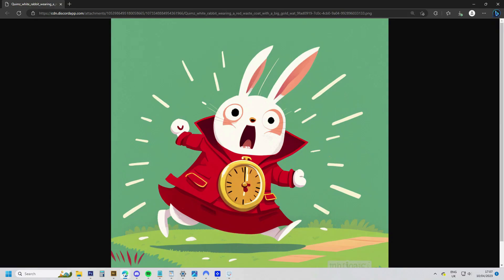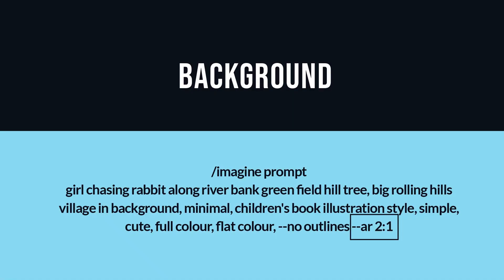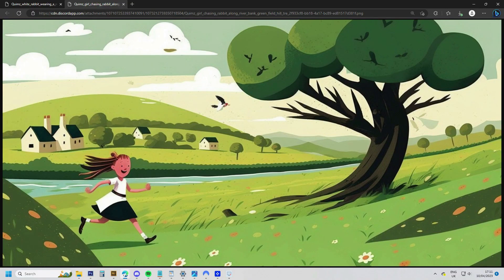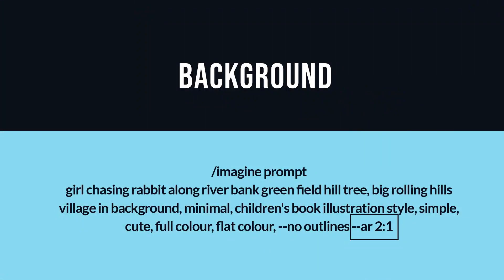And lastly, the background. I've used 'a girl chasing a rabbit' in the prompt, as it will provide a background that has the right composition for adding the characters I'm going to use. I can edit out the girl from the background in Photoshop. I've also included prompts such as 'flat color' and '--no outline' to ensure consistency between the characters and the background. Another thing to consider is adding --ar, which is the aspect ratio flag, followed by a space and the numbers associated with your illustration proportions. I've used 2:1, as my template illustration is twice as wide as it is high.